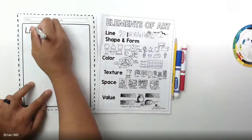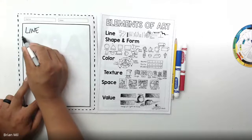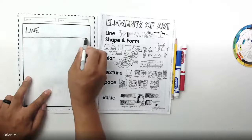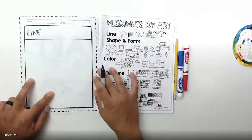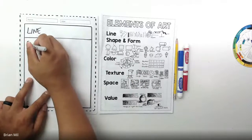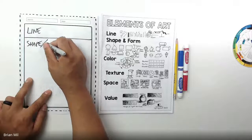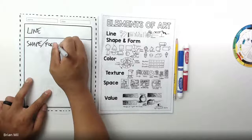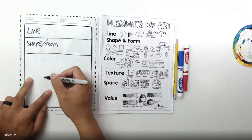First one is line. And then what you're going to do once you're done writing that, I want you guys to create a dividing line so you have space to draw an example. Okay, so do that right now. Next one, shape and form. Shape dash form. I'm going to make sure this section is a little bit bigger.